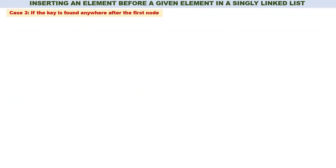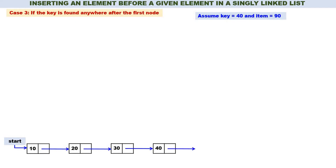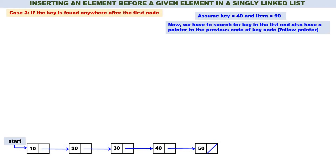Now let us discuss Case 3: if the key is found anywhere after the first node. Let us assume key is equal to 40 and item is equal to 90, and this linked list has nodes 10, 20, 30, 40, and 50. Key 40 is found in the linked list. We have to search for key and also maintain a pointer to the previous node of the key node — a follow pointer. We need not only a pointer to 40 but also a pointer to node 30, because we are inserting before 40. So we require two pointers: a pointer to 40 and a pointer to node 30.